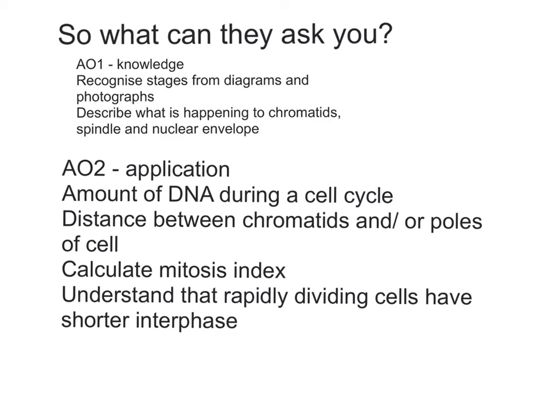For the higher grades, they'd expect you to be able to apply this knowledge to different situations. For example, they would expect you to understand that the amount of DNA in a cell changes during a cell cycle — that the amount of DNA will double during late interphase and it won't go back to the normal level until the end of mitosis or cytokinesis. They would expect you to be able to interpret data about the distance between the sister chromatids and the poles of the cell. They'd expect you to be able to calculate the mitotic index and also to understand that rapidly dividing cells, such as cancer cells, have a much shorter interphase.